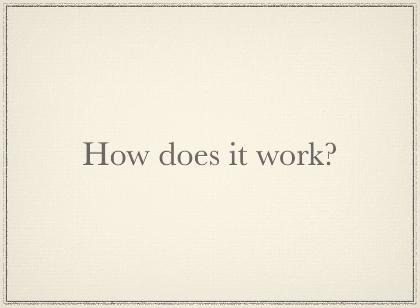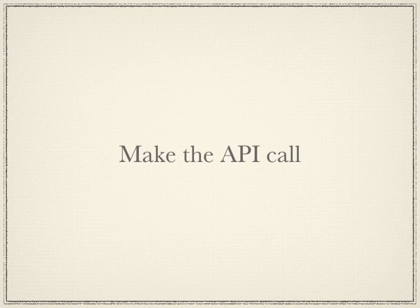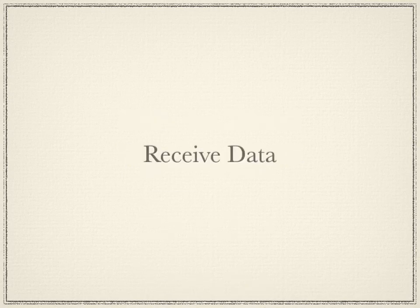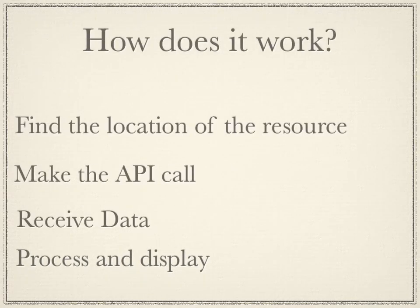Now you know about REST and client-server concepts. We need to talk about how you actually do this in iOS. The first part is finding the location of the resource. Here's one example from Twitter that gets the latest tweets from the public timeline. After you know where you want to get it from, you make your API call, then retrieve the data from the web service, and finally process and display that data in a meaningful way to your user.